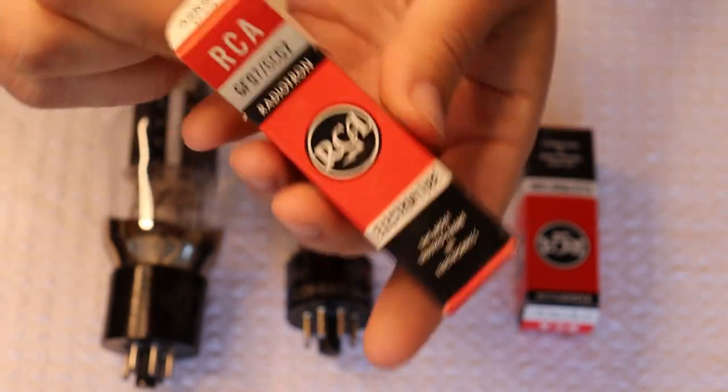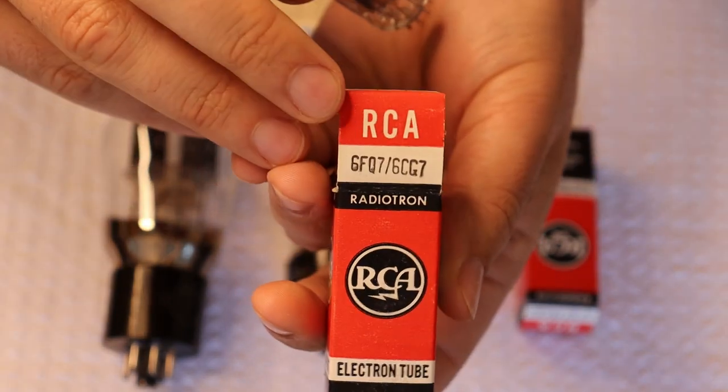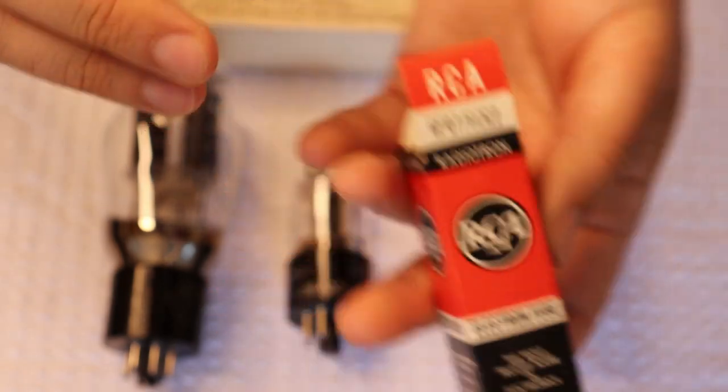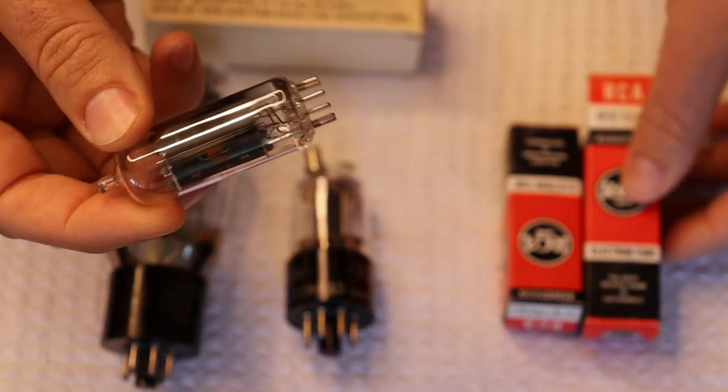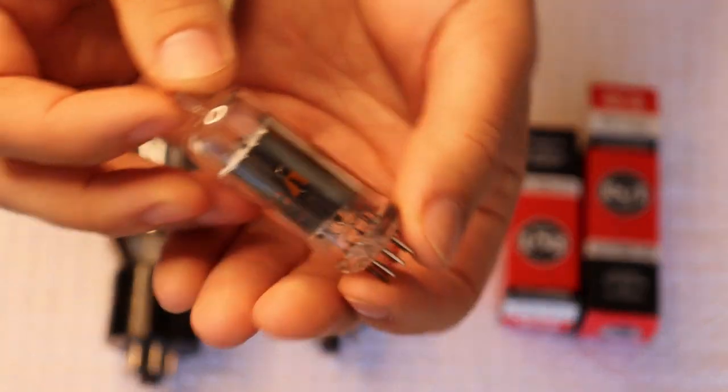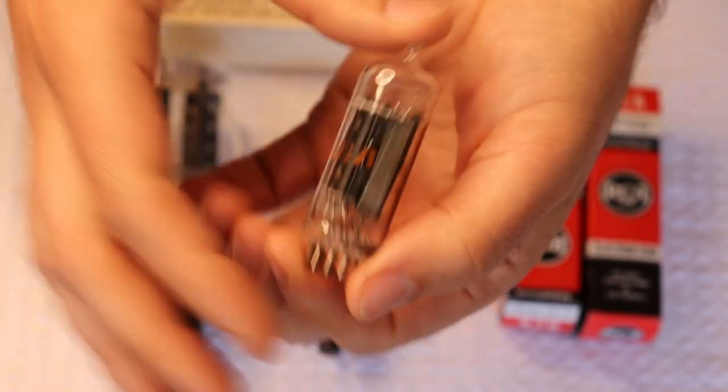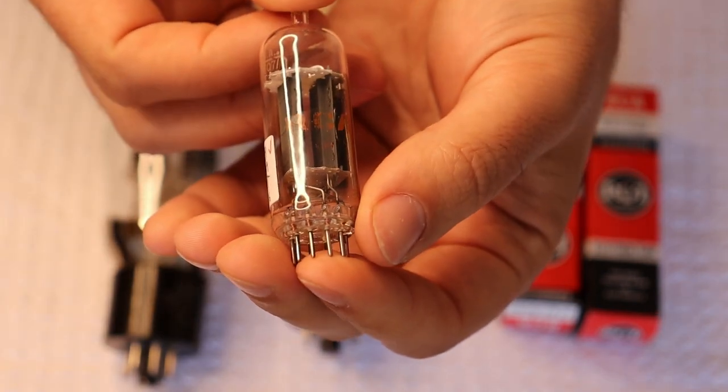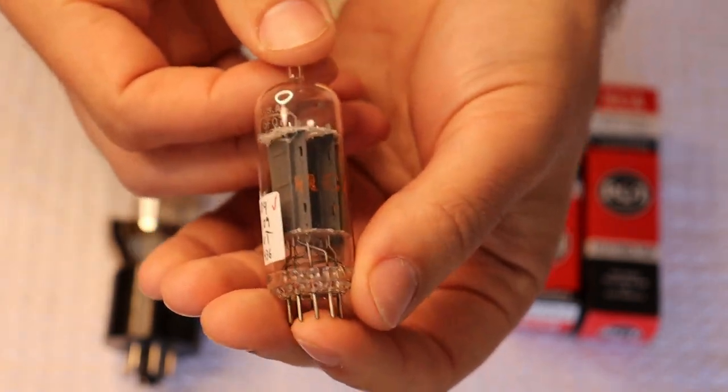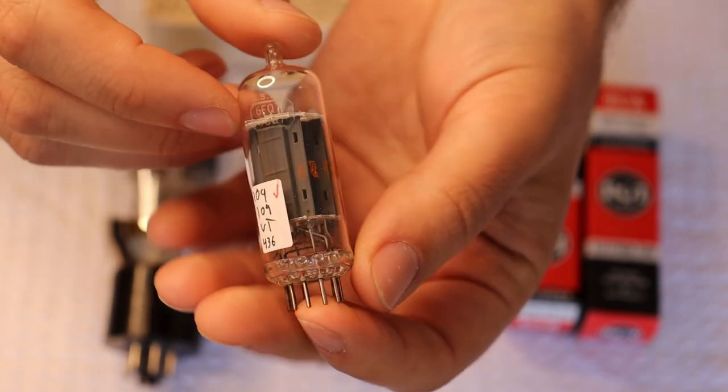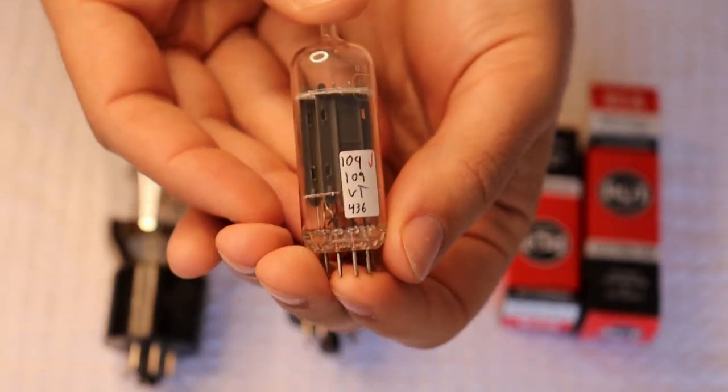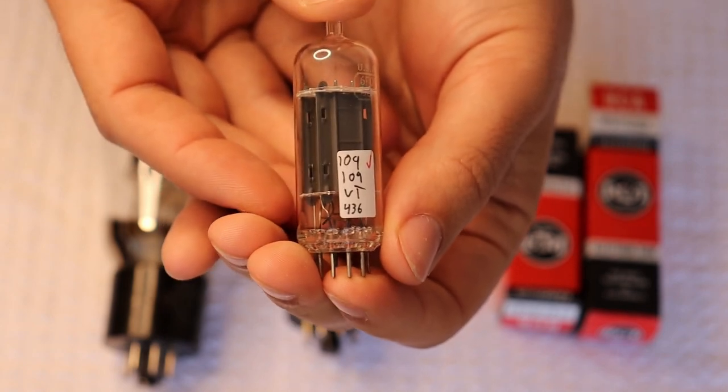Now we've been talking a lot lately about the 6GU7. And this, of course, is its cousin, the 6CG7, which is the much more well-known version because it is the direct nine pin equivalent of a 6SN7. Whereas the 6GU7 has a... It's a small difference in specs. I think the Mu is three less or minus. Something like that. 20 versus 17, which is almost negligible.